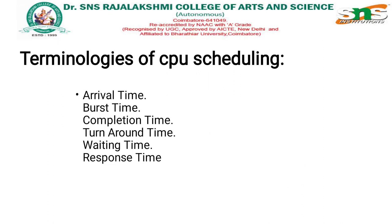The terminologies used inside CPU scheduling include: Arrival Time, which denotes the time at which a process enters the processor. Burst Time, which denotes the time the process executes on the processor. Completion Time, which defines when the process completes. The difference between burst time and completion time is also noted. Burst time is the time that is set by the processor.